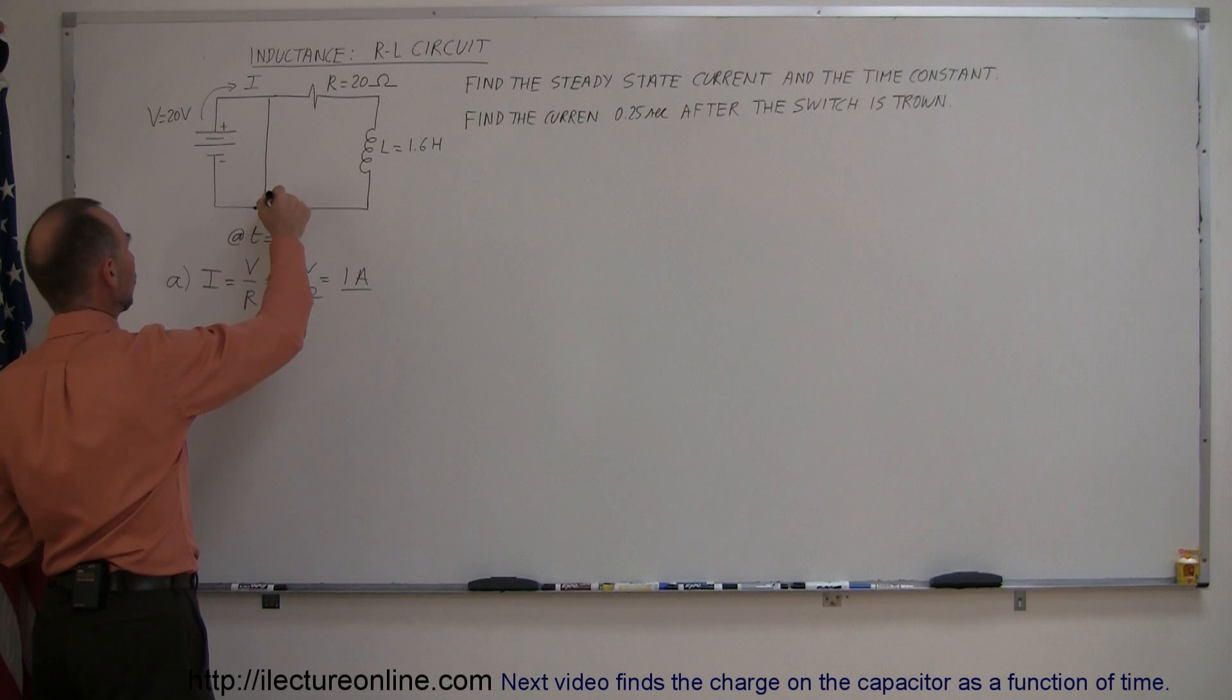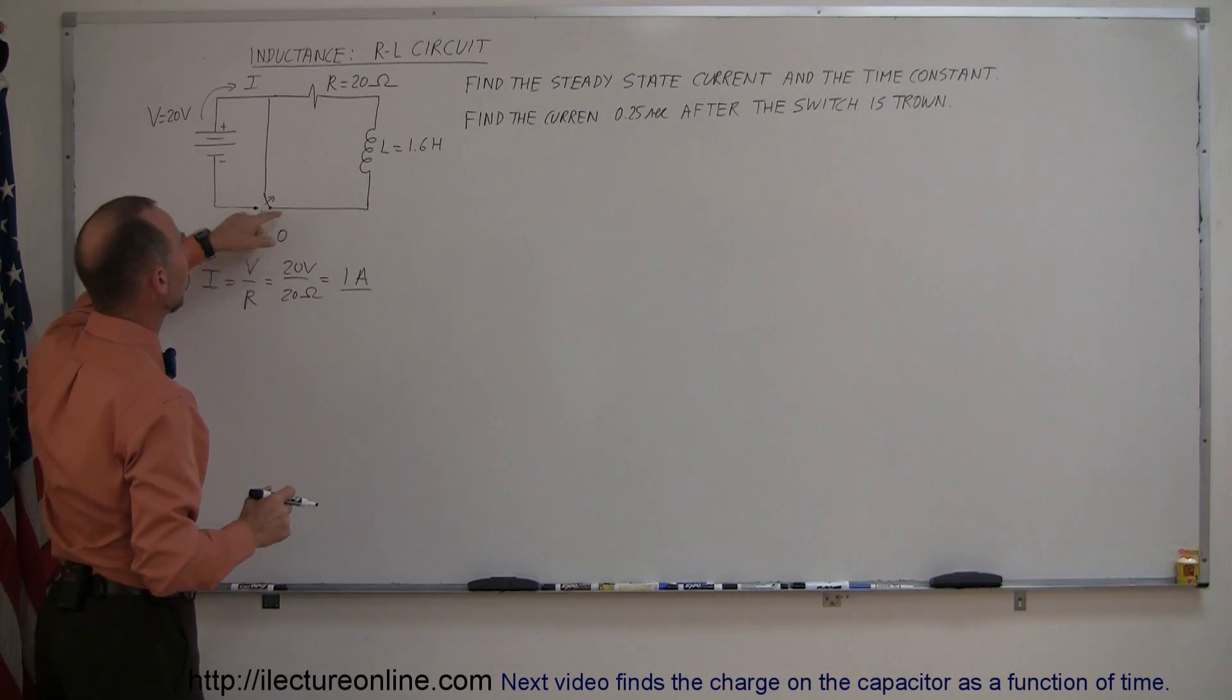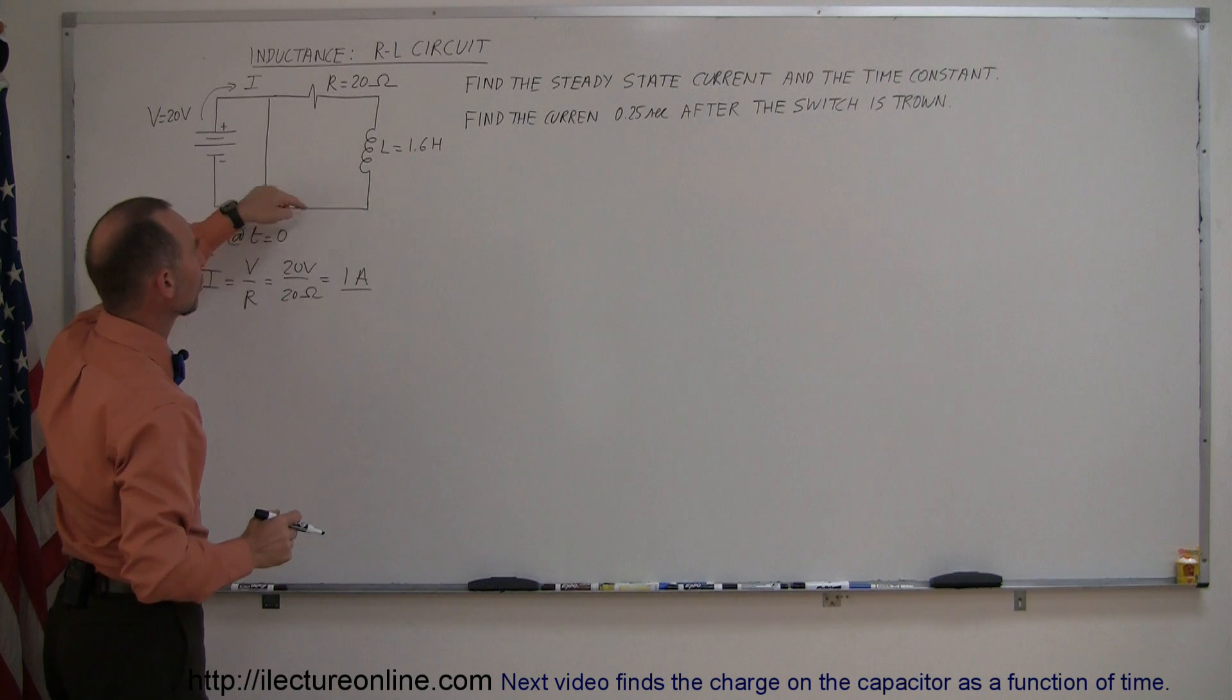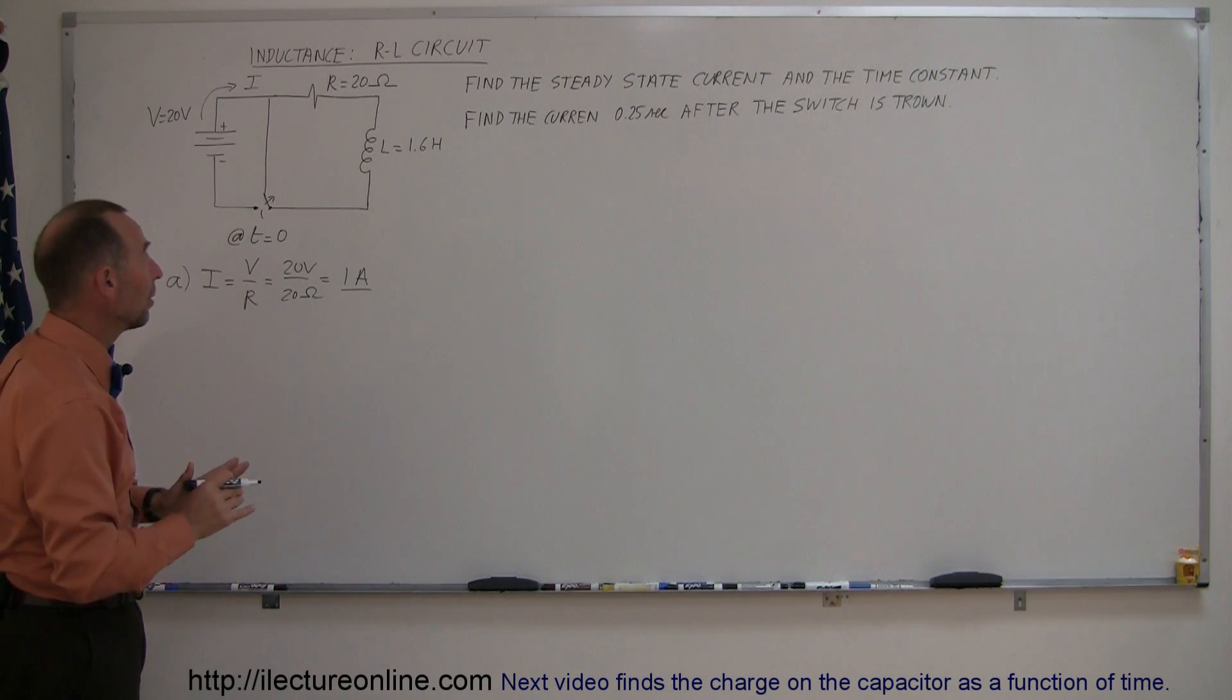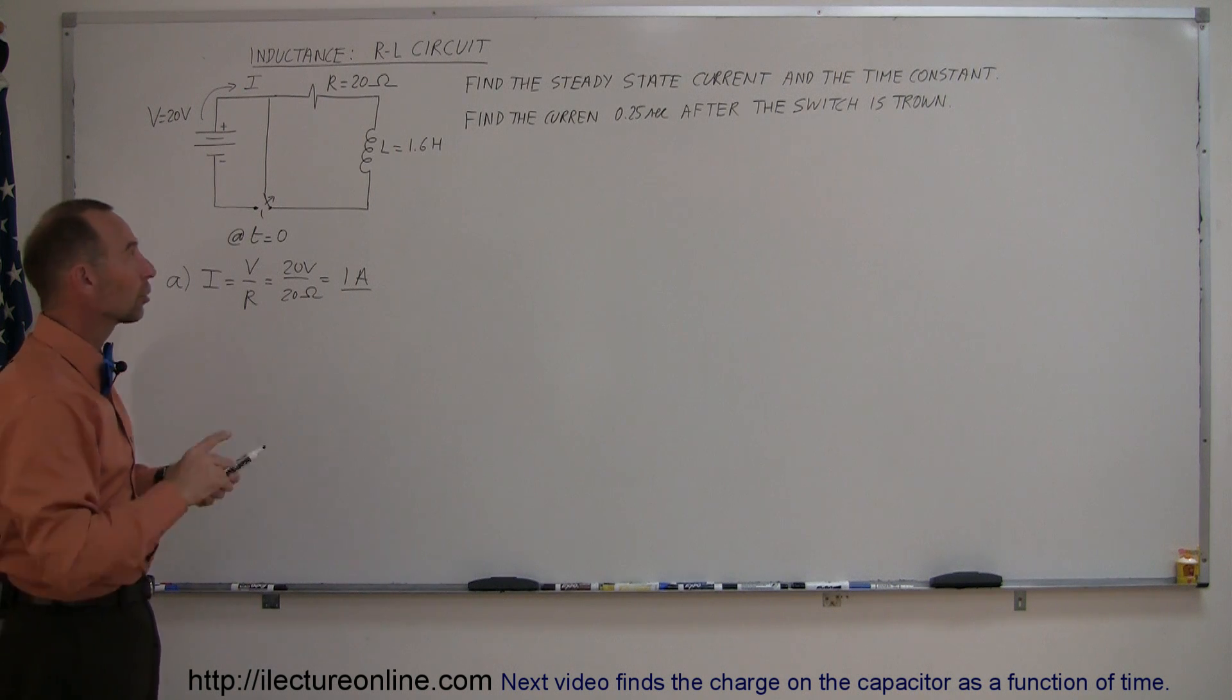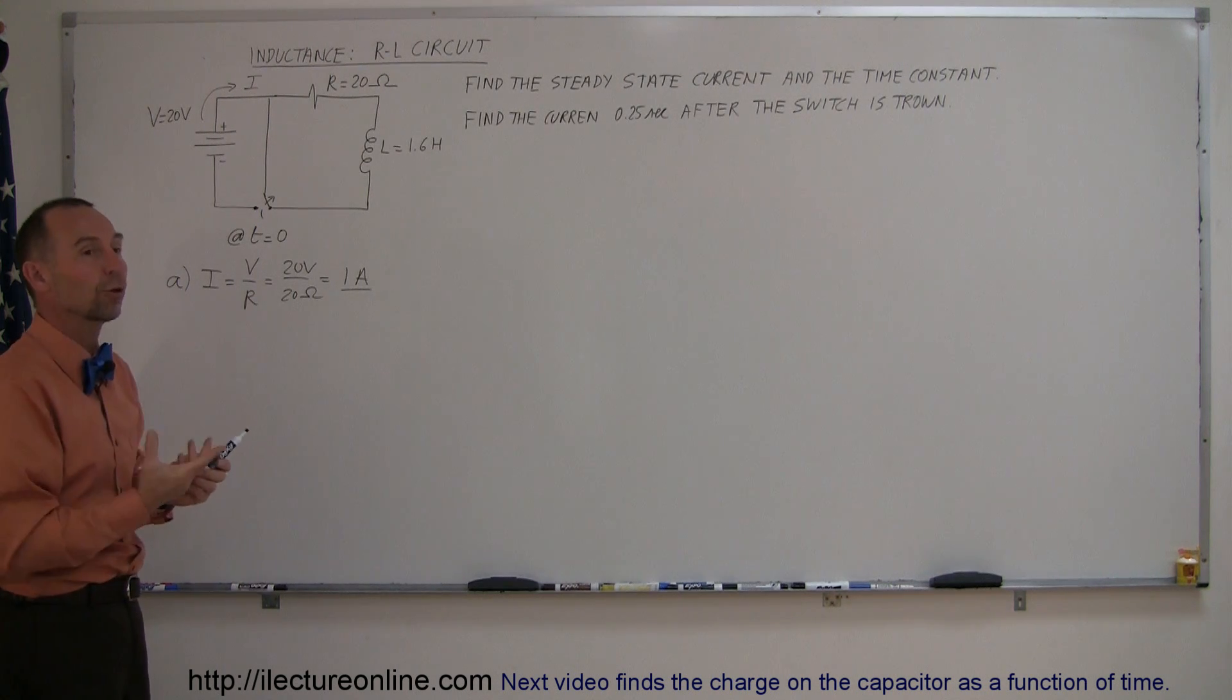After we throw the switch and the switch goes into this new position so that there's no longer a connection this way but now there's a connection that way, the battery no longer plays a role. Now we have the current in the circuit that normally would instantaneously stop but because the inductor is there the current will not instantly stop. The conductor will try to oppose the difference of change in the current and try to keep the current going for a while.